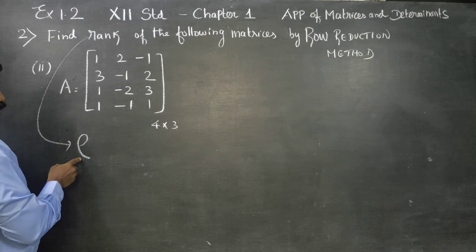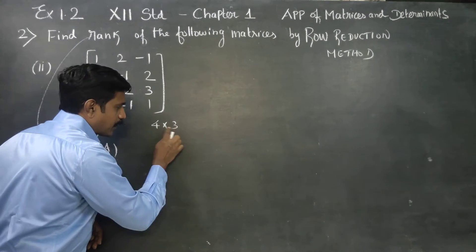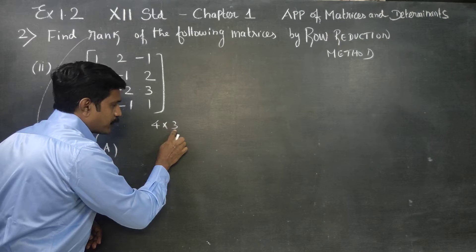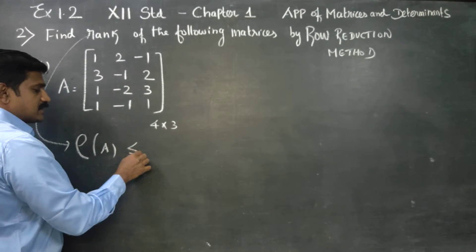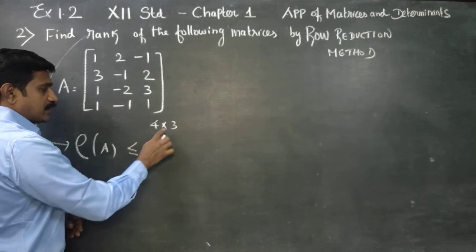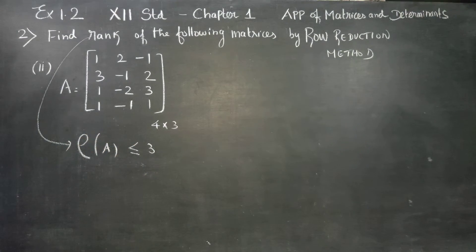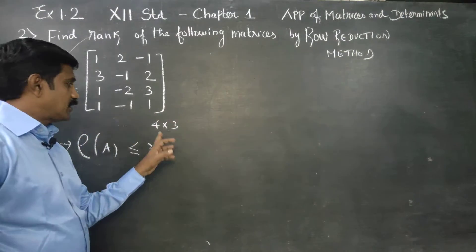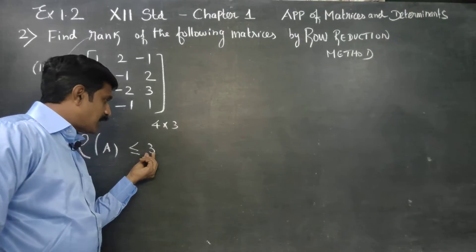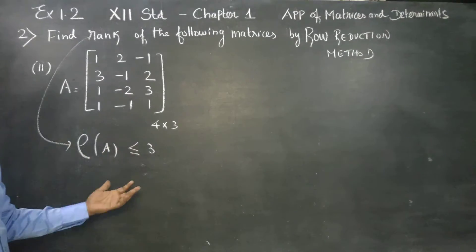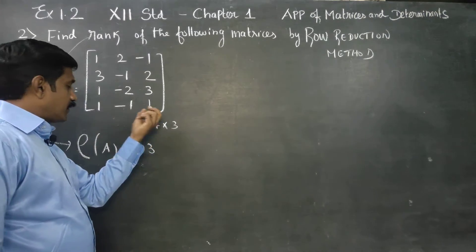The rank symbol — rank of A — minimum number 3 is the minimum number. Rank of A will be less than or equal to 3; that is the minimum number, that is the rank.